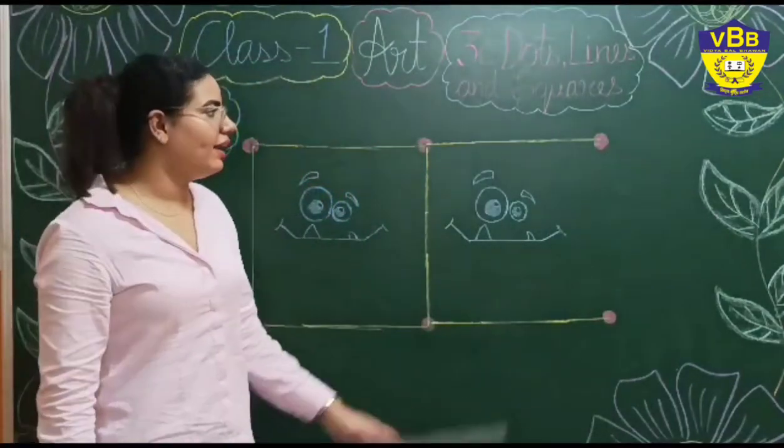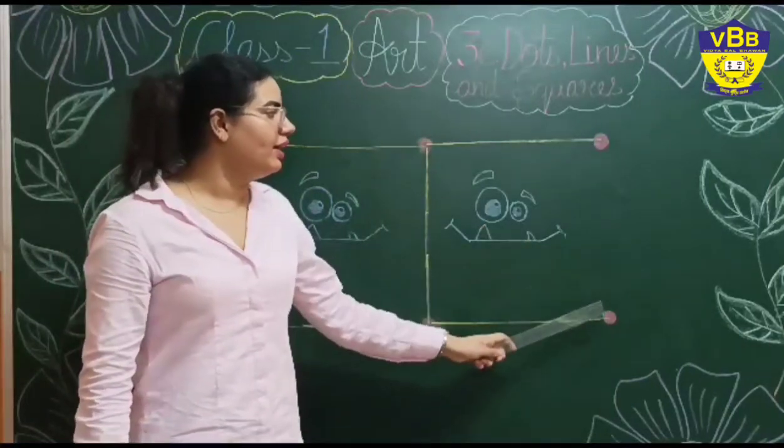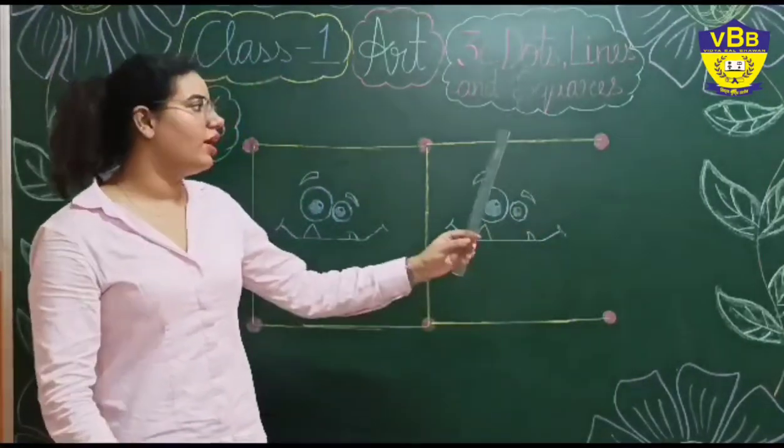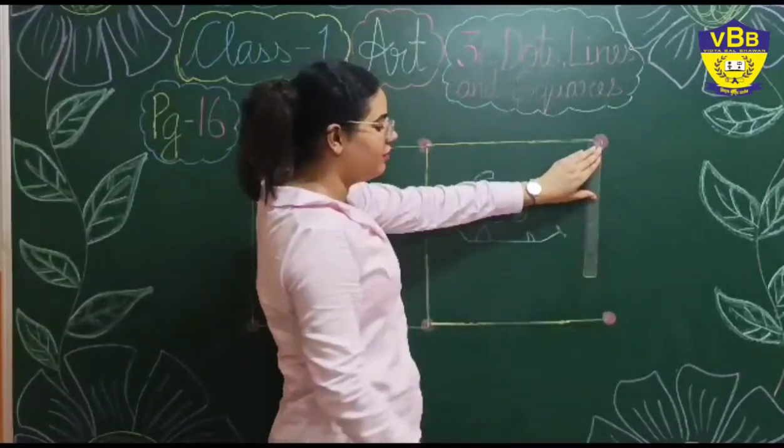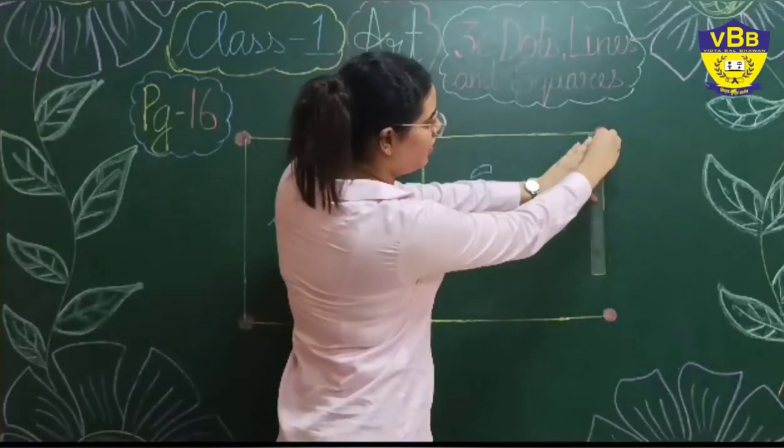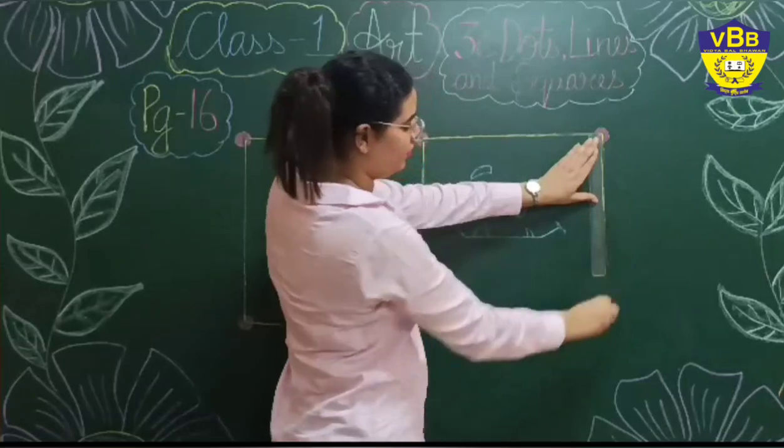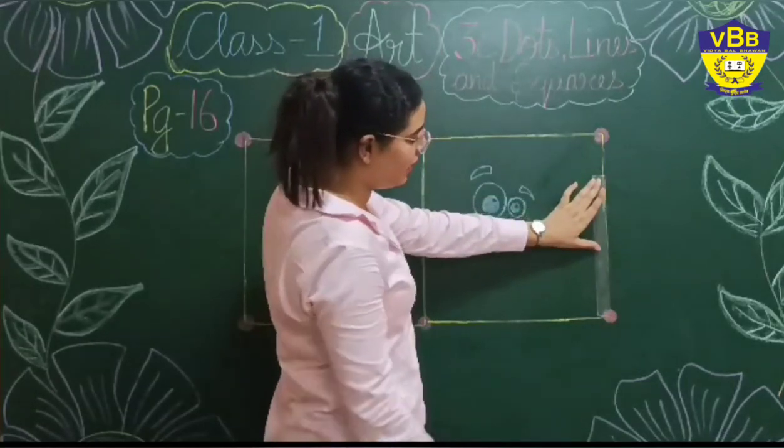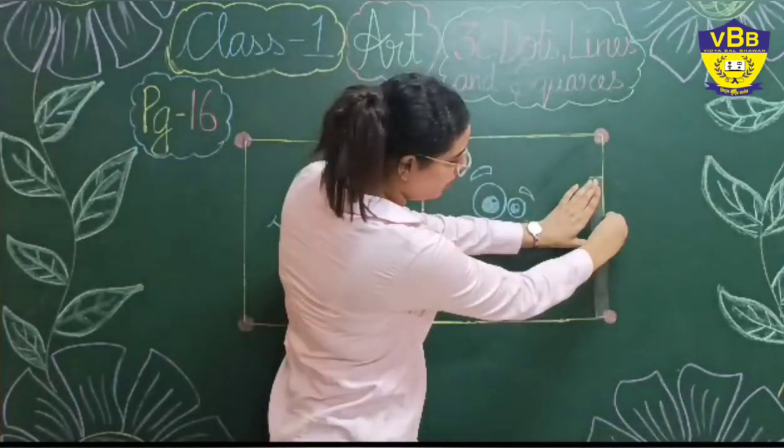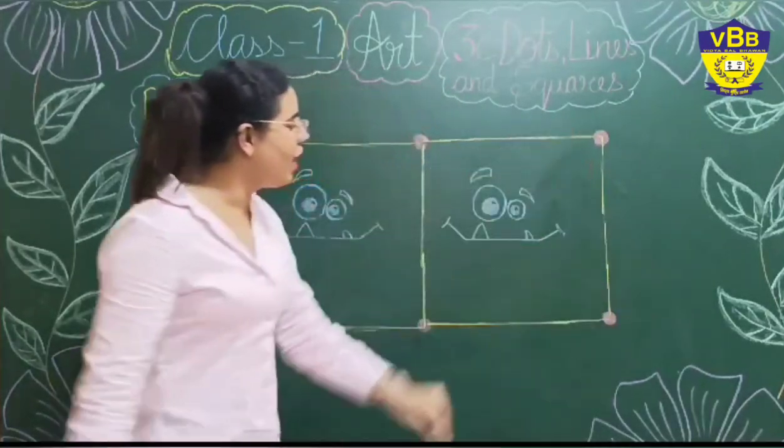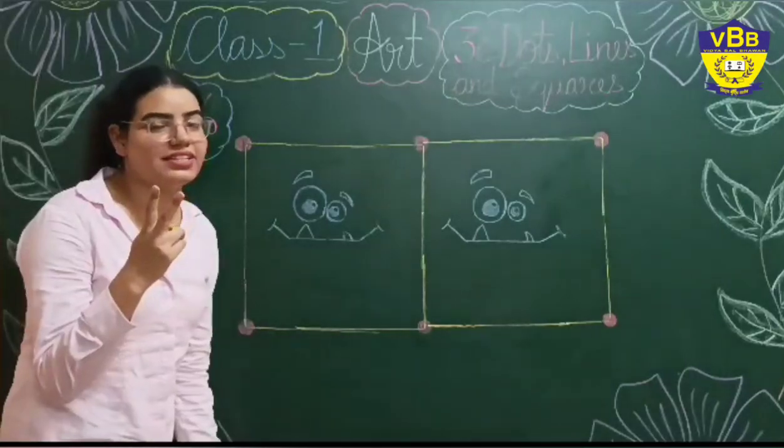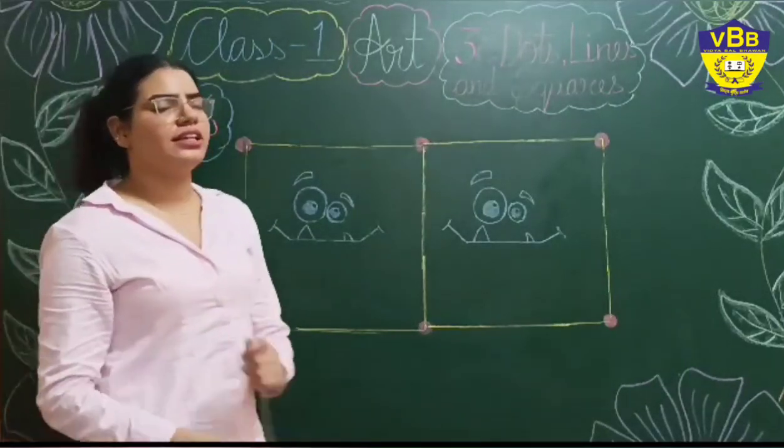So now at the end we have to join these two dots. We are going to place the scale in between the dots. And we are going to make a straight line like this. Oh wow. We got two monster faces. Right? Yes.